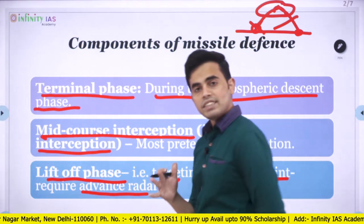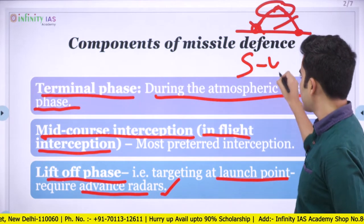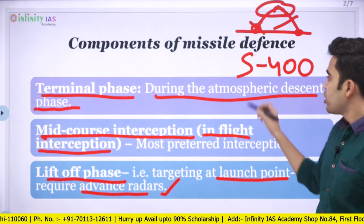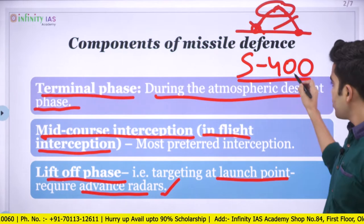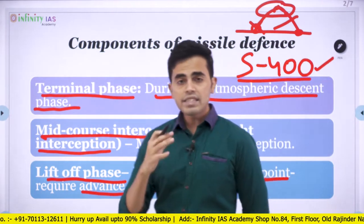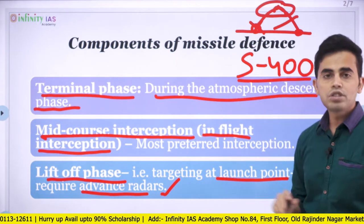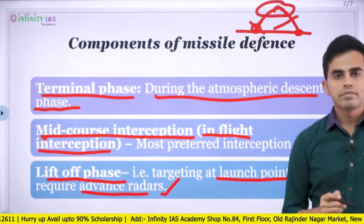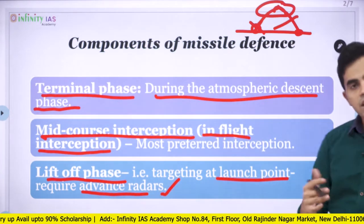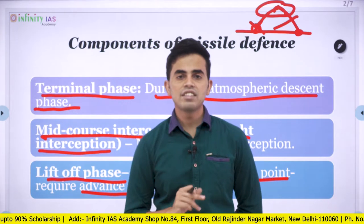India also has a ballistic missile defense system. We have seen in the news regarding the S-400 missiles that India is buying from Russia, with the US threatening to launch sanctions if India proceeds. The S-400 is a kind of missile defense system used to protect our territory from enemy missile launches. India's missile defense system has both indigenous and imported components, and today we will look at the indigenous parts.